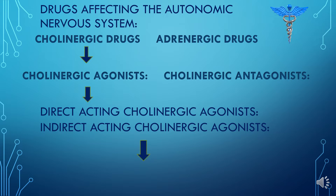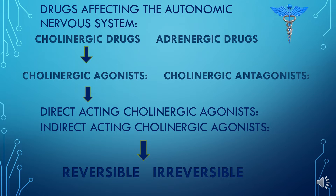Indirect-acting cholinergic agonists may be reversible or irreversible. In the reversible type, the drug loosely attaches to the acetylcholinesterase enzyme and temporarily inhibits its activity, while in the irreversible type, the drug binds covalently and tightly to the acetylcholinesterase enzyme and permanently inhibits its activity.